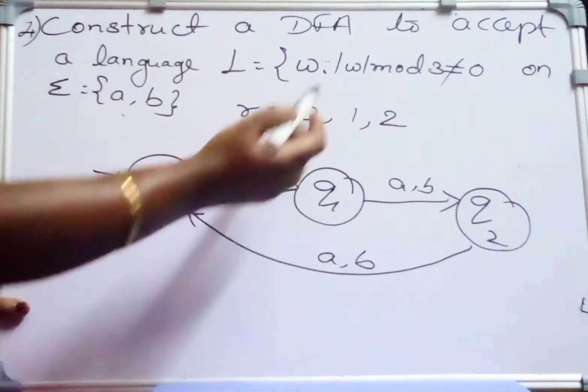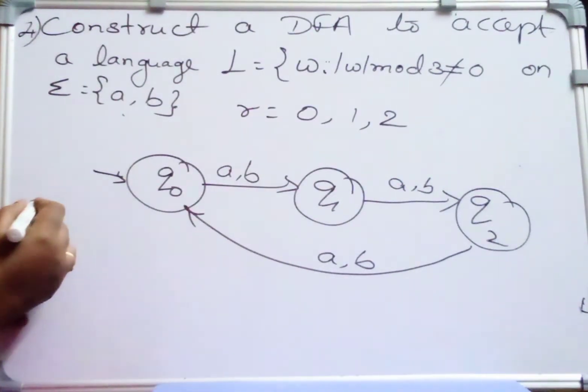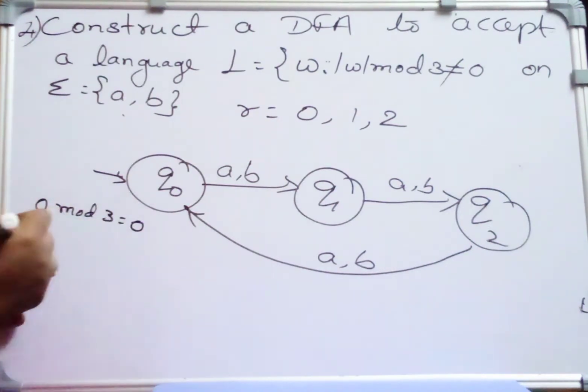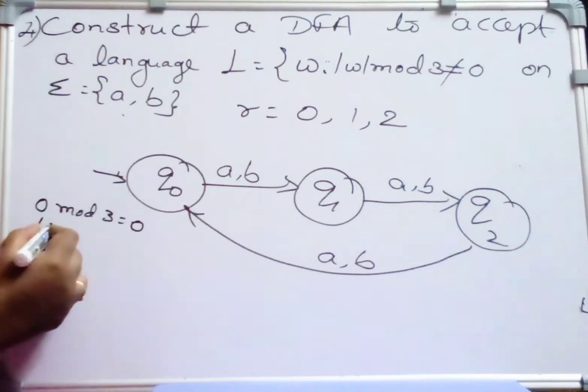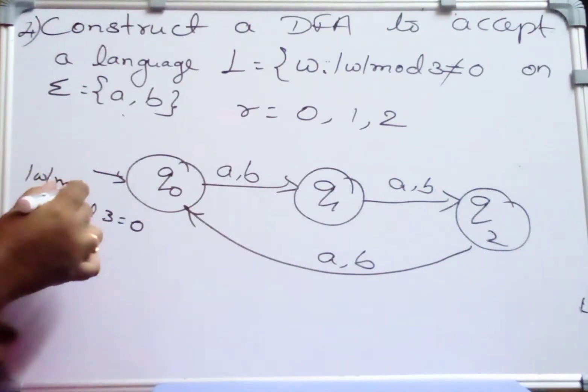Now, here W mod 3 should not be equal to 0. Suppose my string length is 0, 0 mod 3 is equal to 0. If it is 1, 1 mod 3 - if my string W is 1 means that is W mod 3. If my string is 1, then 1 mod 3 is equal to 1.